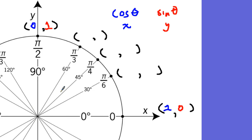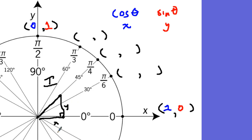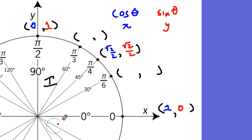At 45 degrees, the triangle is the same in the x as it is in the y. If you measure that out, x would be root two over two. So cosine of 45 degrees — or cosine of pi over four — gives you root two over two. And sine of 45 degrees is also root two over two, because your x's and y's have to be the same.